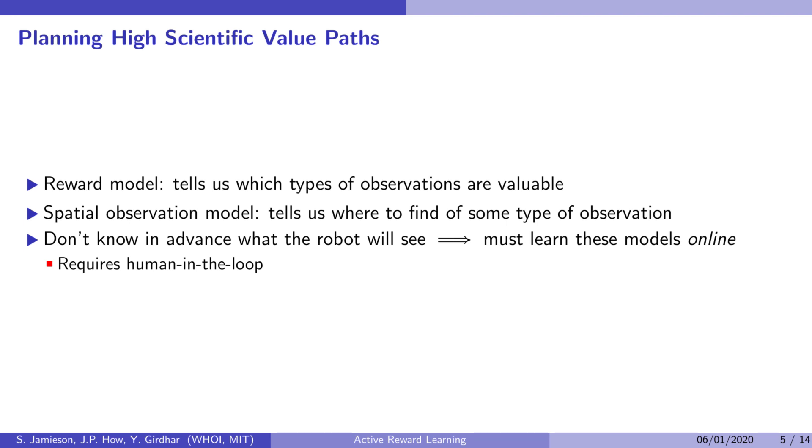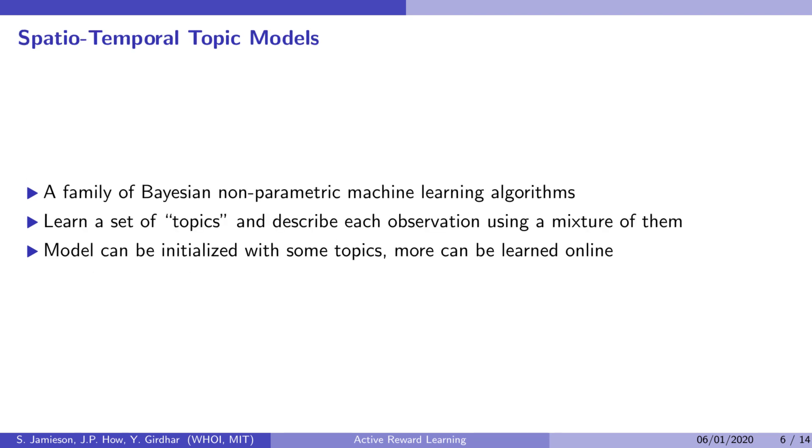Building these models is difficult because there are so many things the robot might see, and it can't possibly be trained in advance to correctly recognize everything it might find in a new environment. To solve this problem, we use spatiotemporal topic models which excel at inventing labels for things they have never seen before.